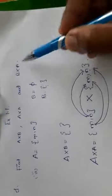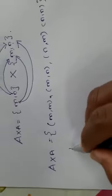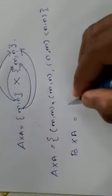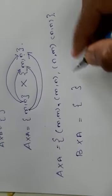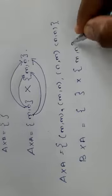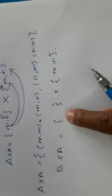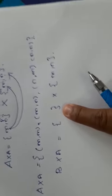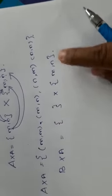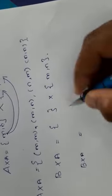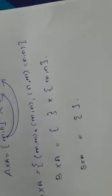Next, you have been asked to find out B cross A. B is null set, and with that you have to take the cross product with {m, n}. Since B is null set, you will not be able to write any ordered pair. Therefore, B cross A is nothing but null set.